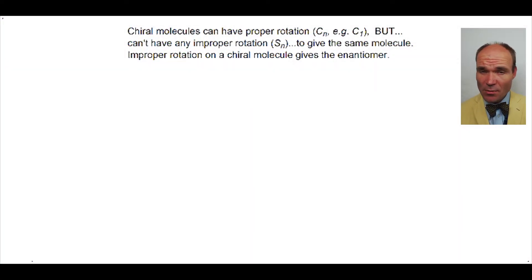Chiral molecules have proper rotation, Cn, for example n equals 1, and they remain the same molecule, but they can't have an improper rotation, Sn. The resulting molecule is not the same, but changed by such an operation to become an enantiomer.